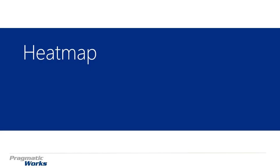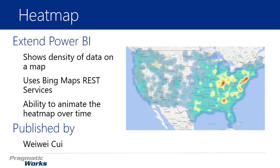Welcome back to the Power BI Custom Visuals course. In this module we're going to be looking at the heat map. The heat map visual is great if you're trying to visualize the density or frequency of values in certain areas on a map. The heat map uses the Bing Maps REST services, so it's going to be connected to Bing Maps and you do need an internet connection. You also have the ability to animate your data across a map, so you can look at the heat map over time or over some kind of categorical data.